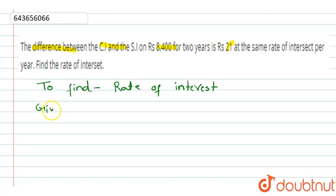Now what is given to us: principle is given to us, P equals to 8400 rupees, and t is 2 years. Difference between CI and SI is given to us: 21 rupees.